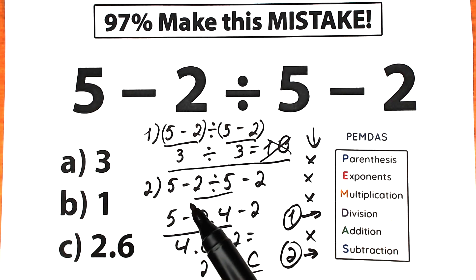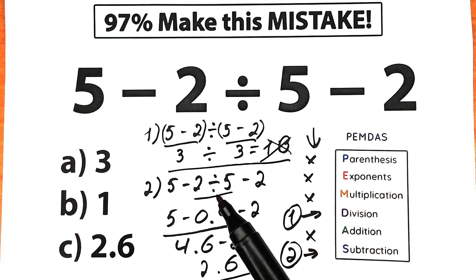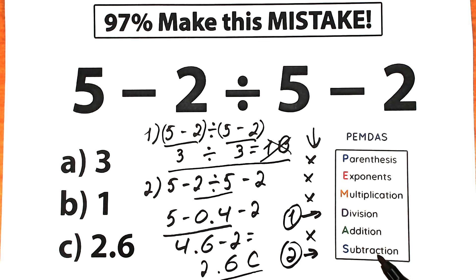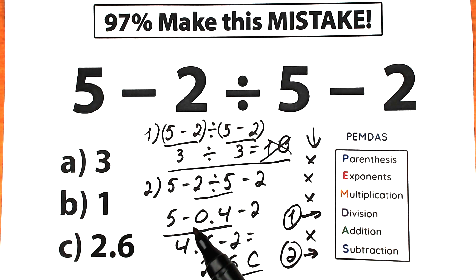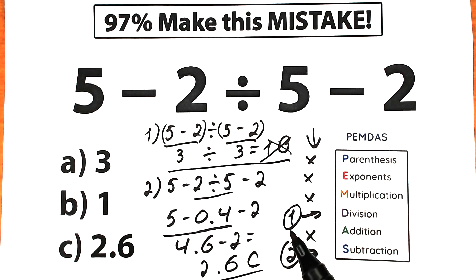Now let's look at the second interpretation. We solved this challenge according to PEMDAS order of operations. The first step was division: 2 divided by 5 equals 0.4, because division has a higher position than subtraction. Our second step was subtraction from left to right: 5 minus 0.4 equals 4.6, and the last step was 4.6 minus 2 equals 2.6. Option C is the correct answer.